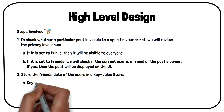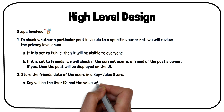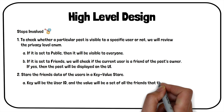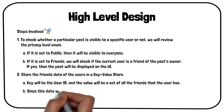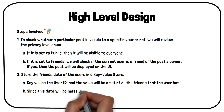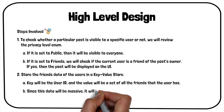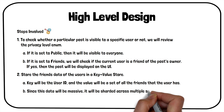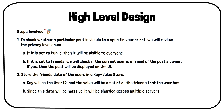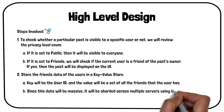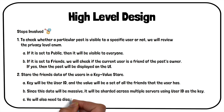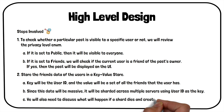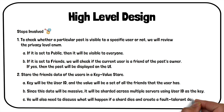One possible way to store the user's friend list is in a key-value store, where the key is the user ID and the value is a set of all friends that user has. Since the friends data at Facebook will be massive, it will not fit on a single machine. We will have to shard this data across multiple servers using the user ID as the key. We will also need to create a fault-tolerant design to handle what happens if a shard dies.